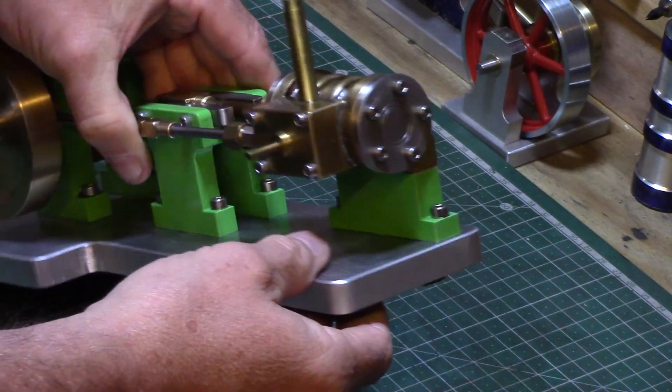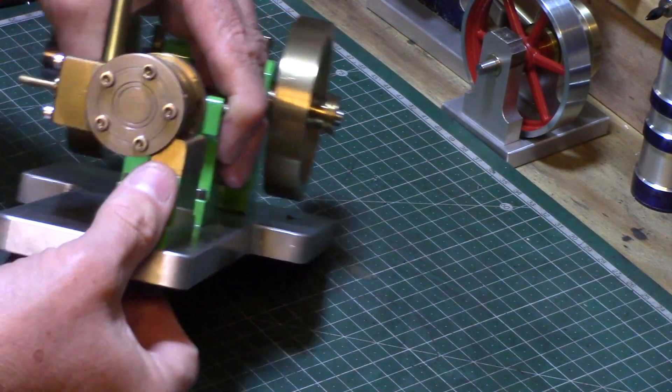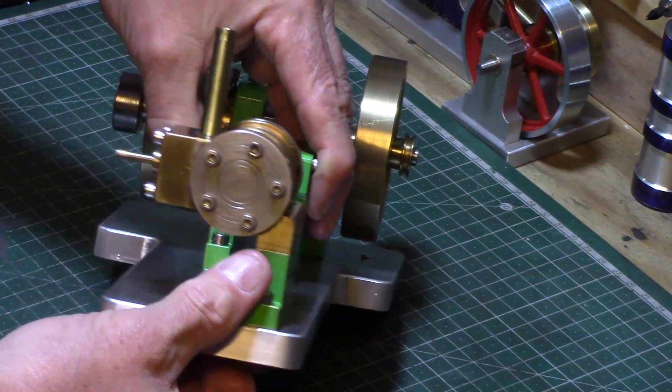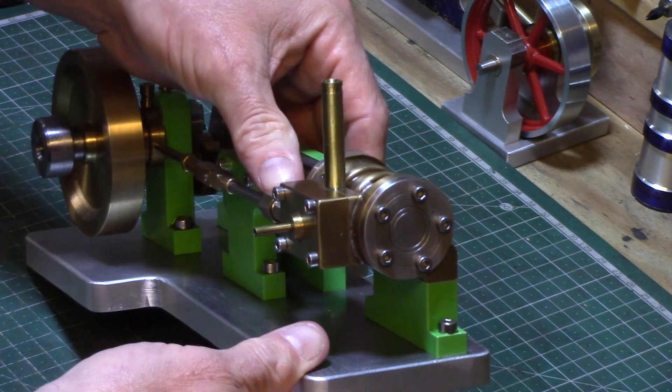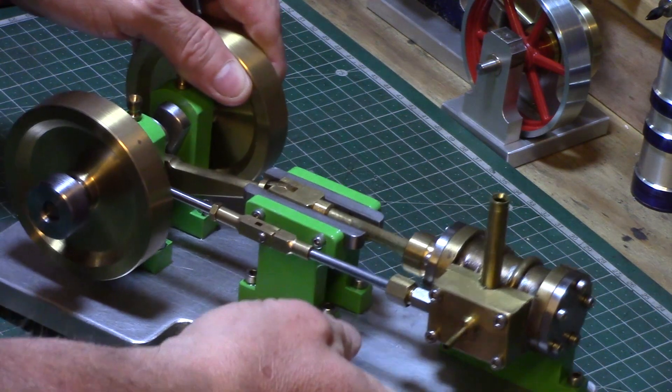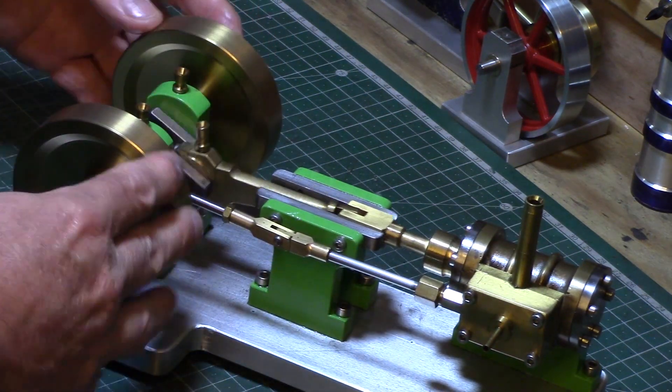The cylinder has been soft soldered to a piece of brass and then fixed to the support by machine screws. The port face was also soft soldered to the cylinder and the steam chest and slide valve machined to suit.